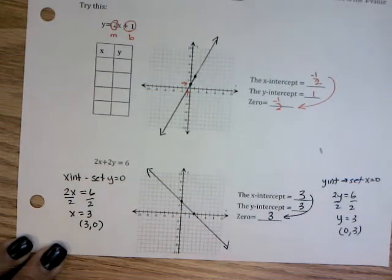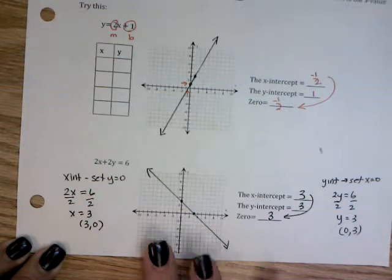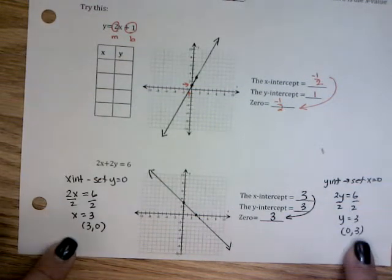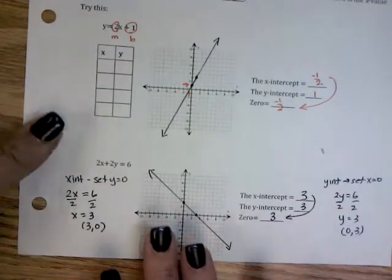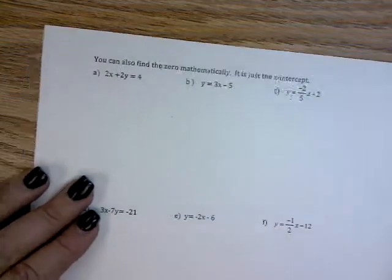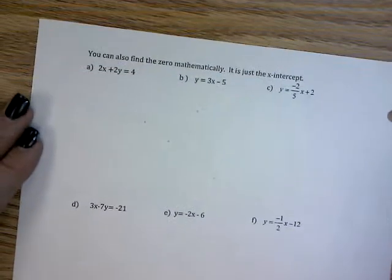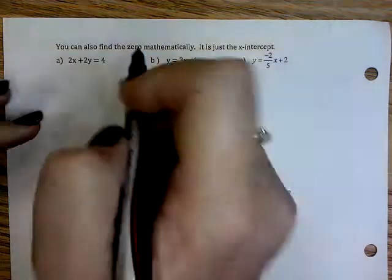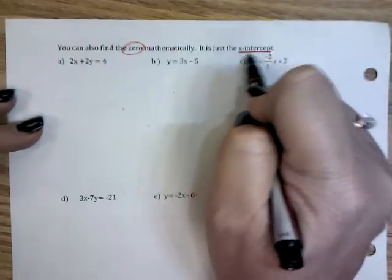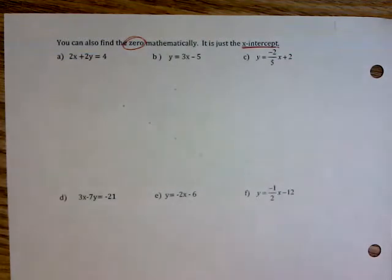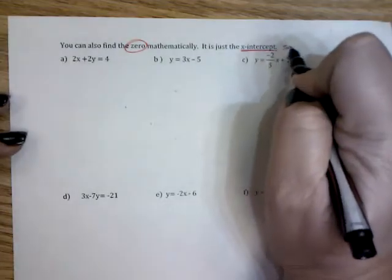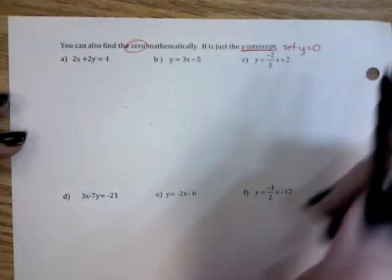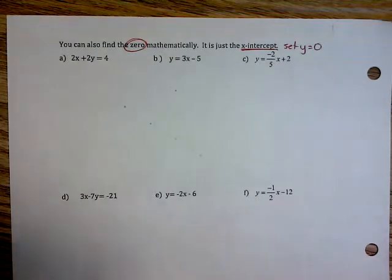Now I found them mathematically, which is what we're going to do in a second. You can either look at the graph and find your x and y intercept because it's graphed right here, or you can find it mathematically, which we did right here. We're going to find the zero mathematically. If I'm finding the zero mathematically, I am only finding my x-intercept.